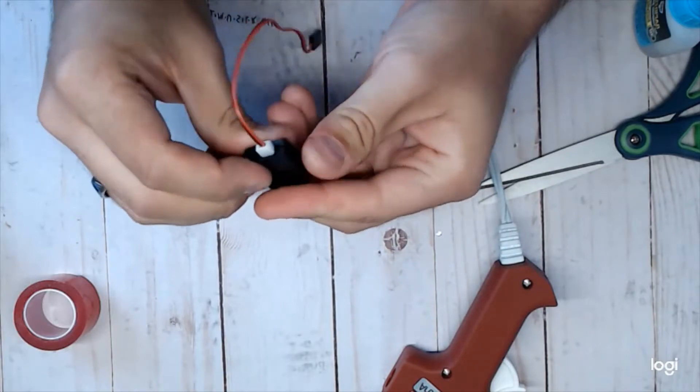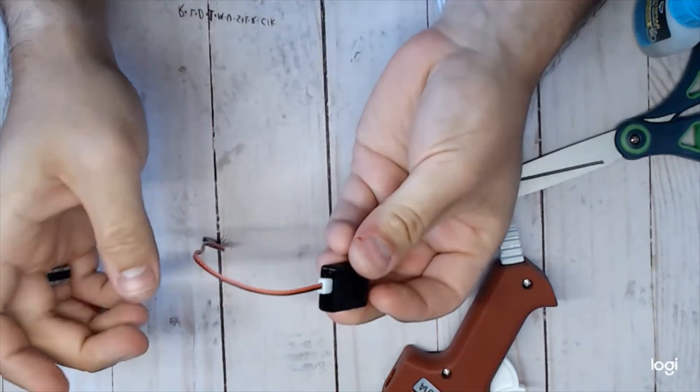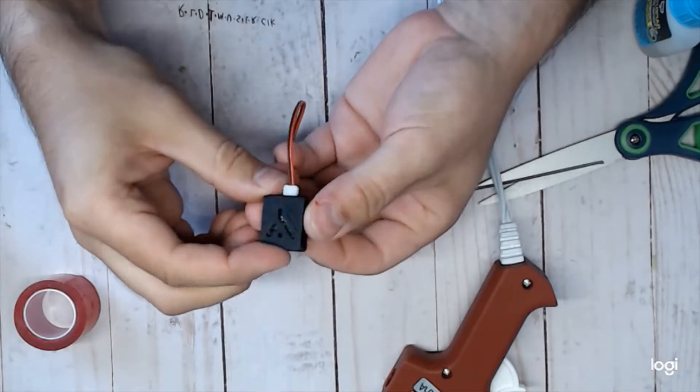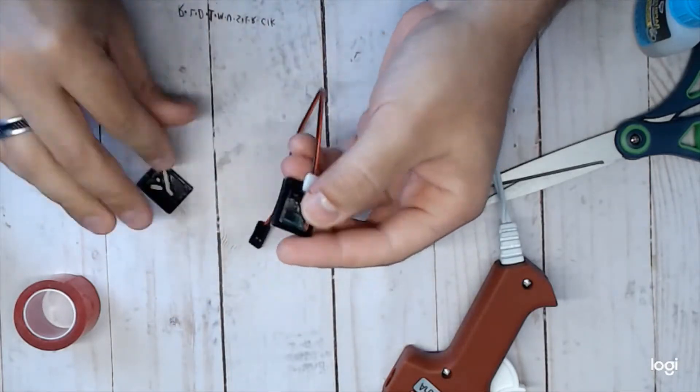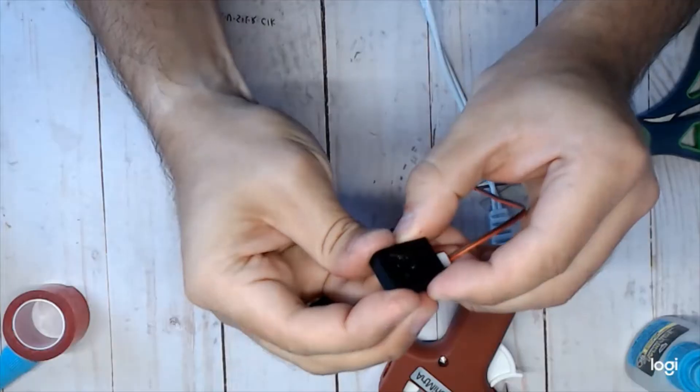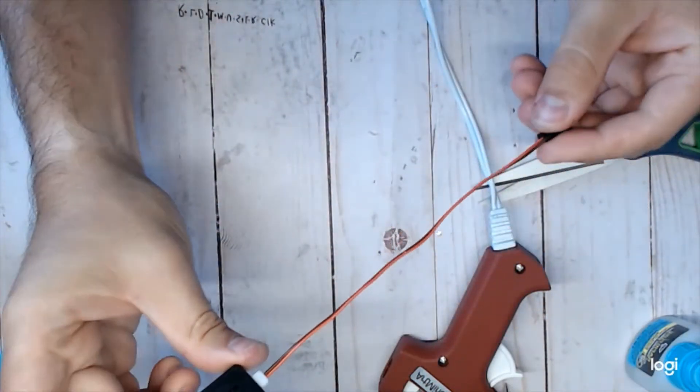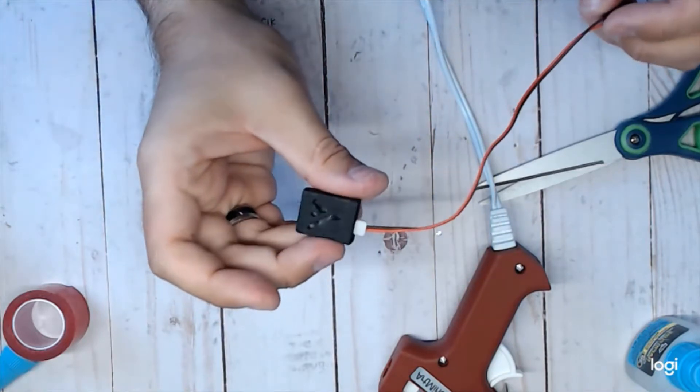So yeah, the lid of this just press fits down onto here. And to secure it, I'm going to actually just use a little bit of CA glue. Up there, we have our, hopefully, working transponder.